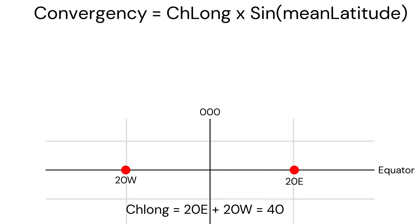Here ChLong is again 20 degrees east plus 20 degrees west, 40 degrees. Since we are at the equator, our latitude is 0 degrees. So our mean latitude is 0 plus 0 divided by 2, which comes to 0.